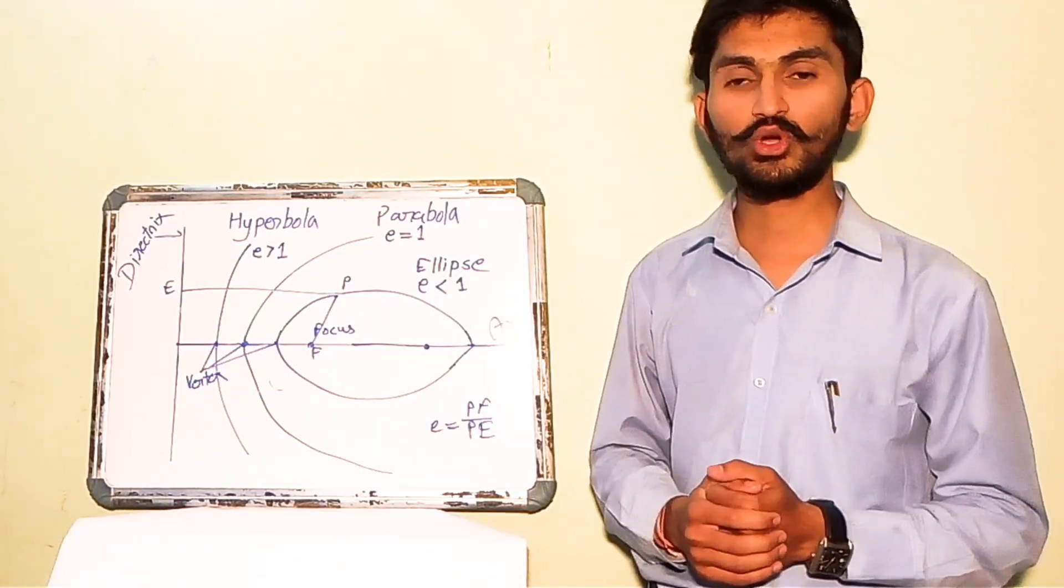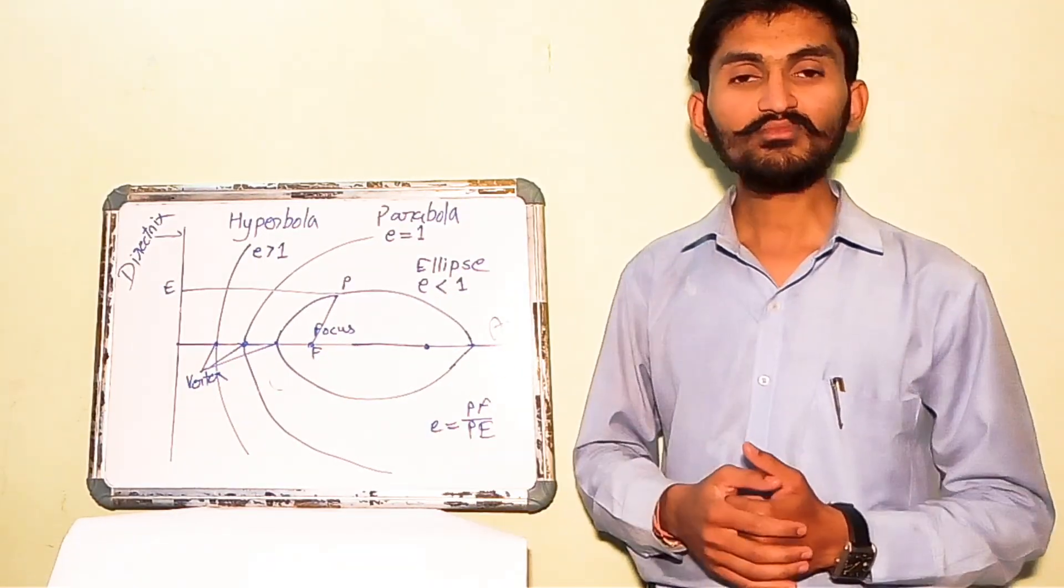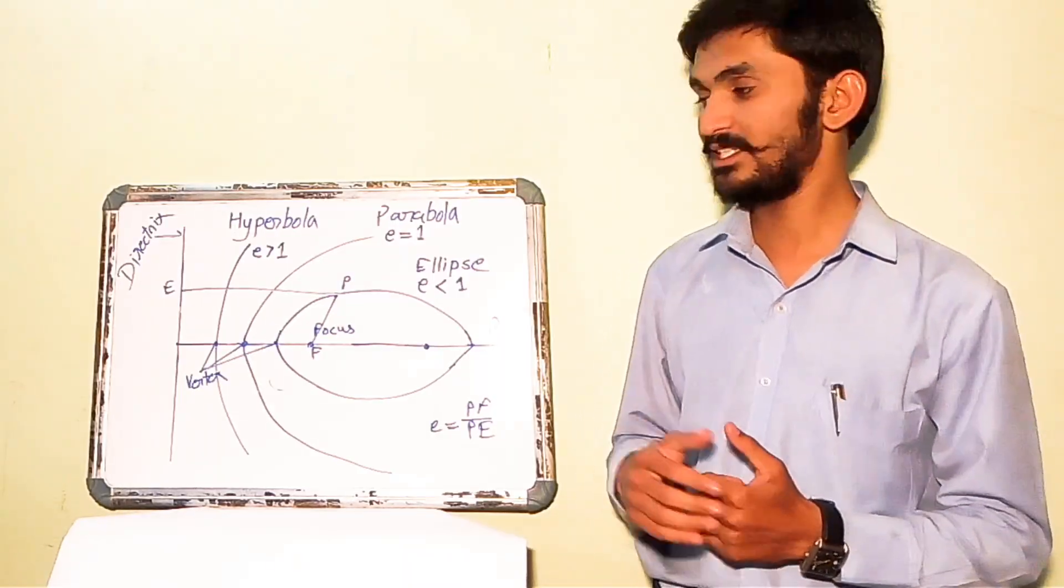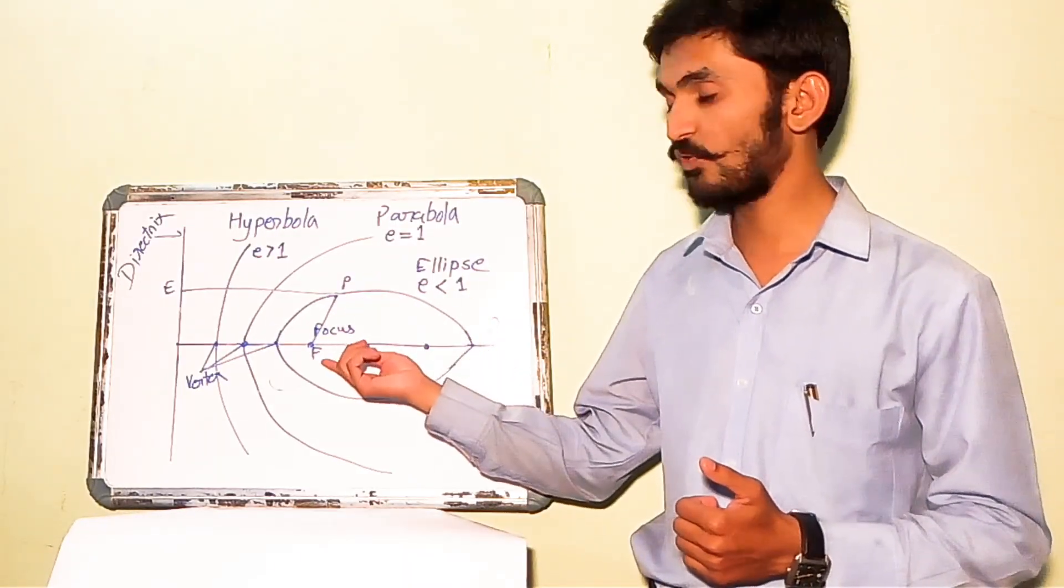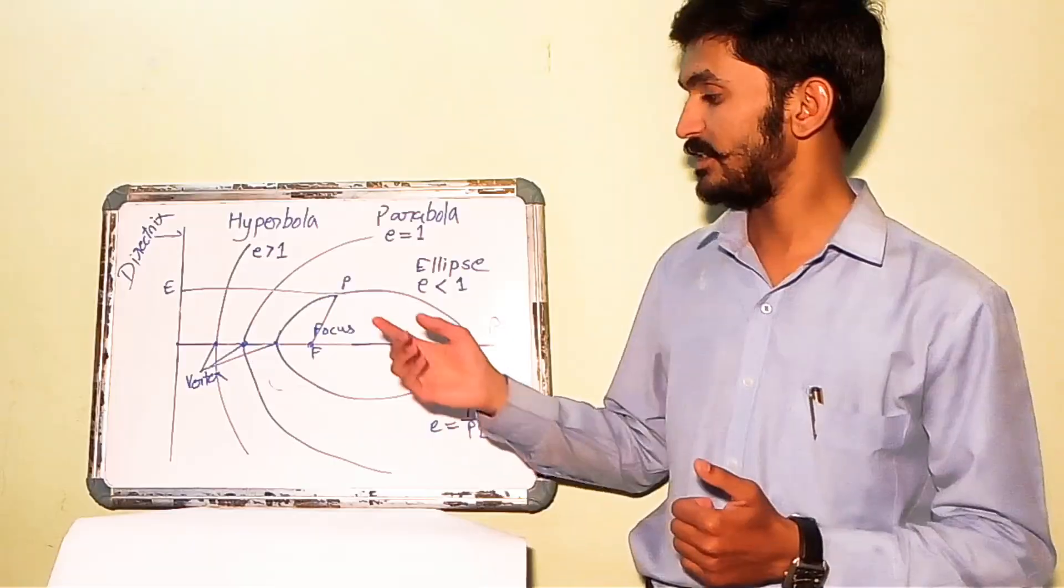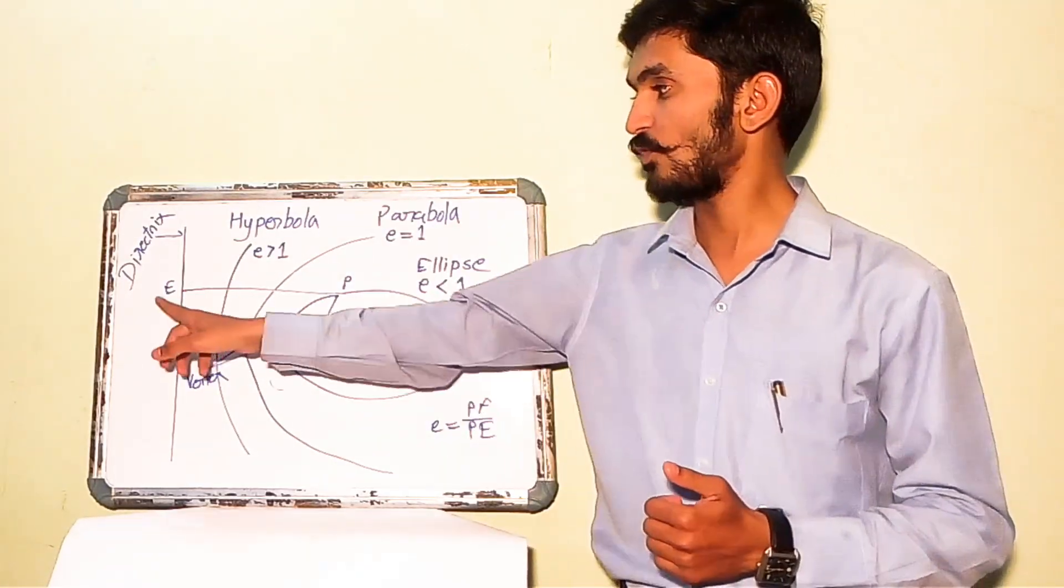And this ratio is called eccentricity. Hence, eccentricity is equals to distance of the moving point from focus divided by distance of that moving point from the directrix.